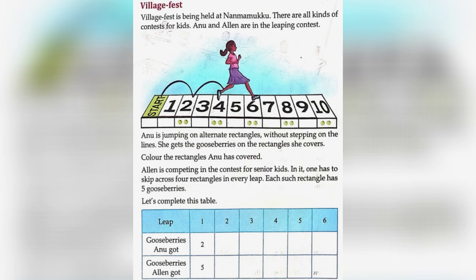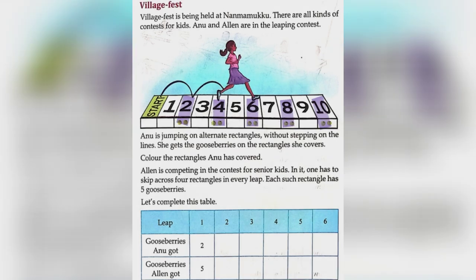She gets the gooseberries on the rectangles she covers. Color the rectangles Anu has covered. The numbers are 2, 4, 6, 8, 10.